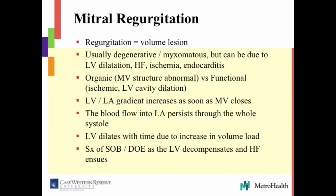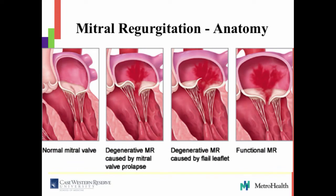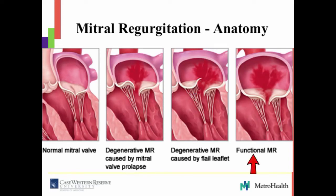Symptoms: shortness of breath, dyspnea on exertion, and as the left ventricle decompensates, people go into heart failure. To bring a little clinical picture: this is a normal mitral valve. This is mitral valve prolapse — you can see it buckles, there's extra tissue, and it just does not close. As the prolapse gets more severe, some of these cords can rip, which is called a flail mitral valve leaflet — more mitral regurgitation because the valve doesn't close. And this is functional MR — if the left ventricle dilates, the mitral valve just doesn't come together, and we see that in patients with significant heart failure.